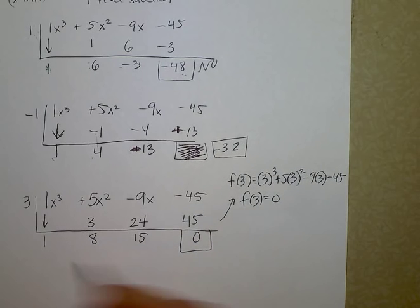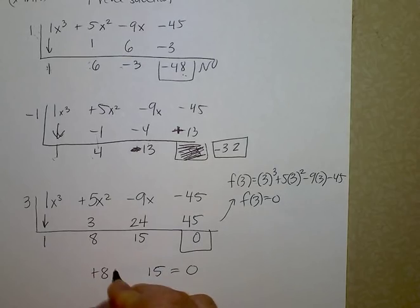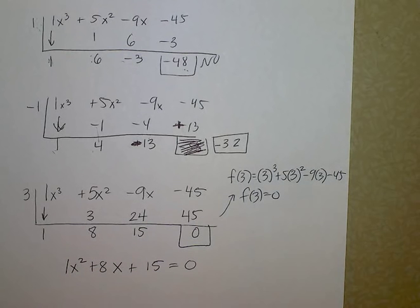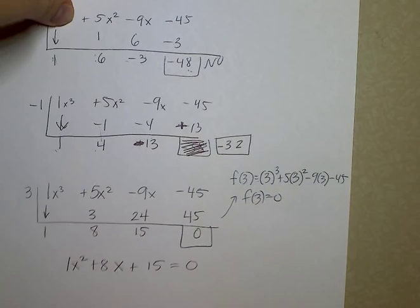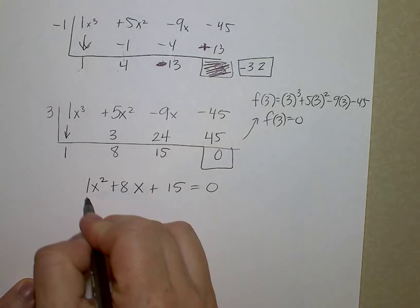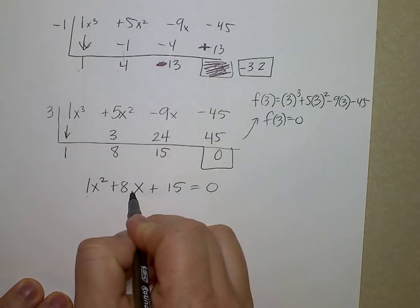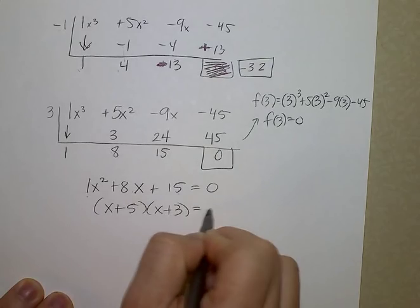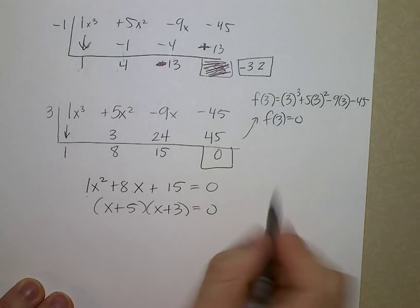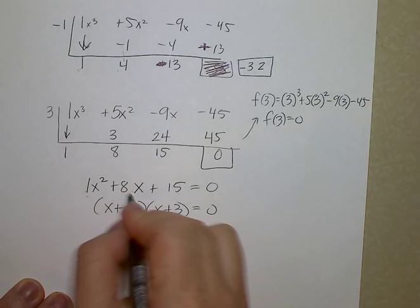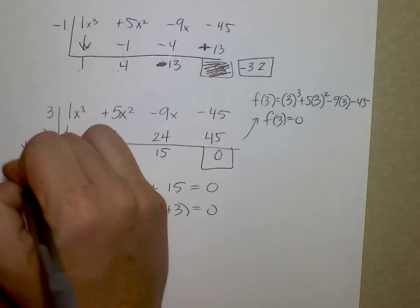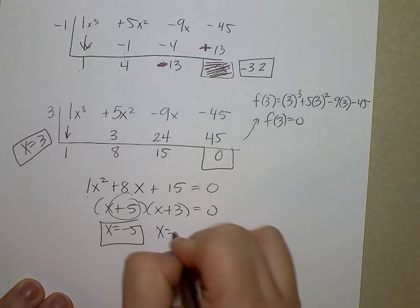Now I'm going to write this as a trinomial. 0 equals, the 15 has no x, the positive 8 has 1 x, and the positive 1 has 2 x's. There's your trinomial. Next, I will factor it and solve it. What multiplies to give you 15 combines to give you 8 would be positive 5 and positive 3. You don't have to worry about bottoms up because the leading coefficient is 1, which means x equals negative 5 is an answer, and x equals negative 3 is an answer.